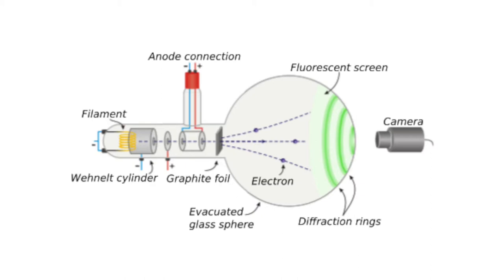The experimental setup consists of an electron tube, a polycrystalline graphite target inside it, and a fluorescent screen.